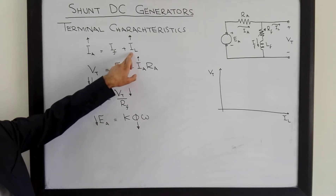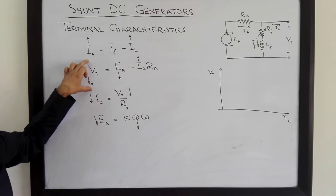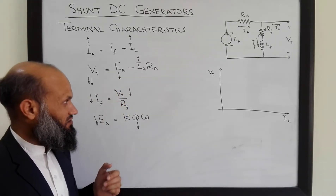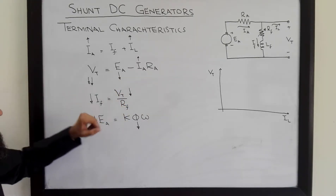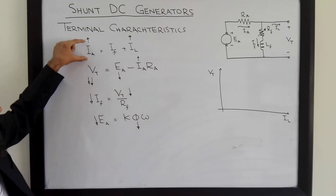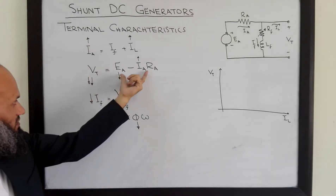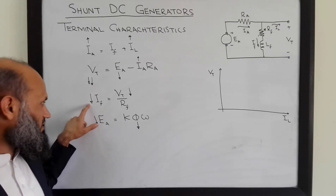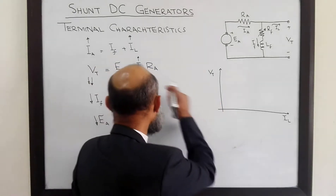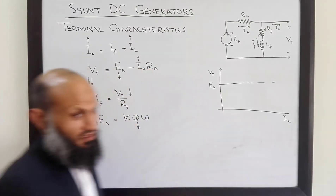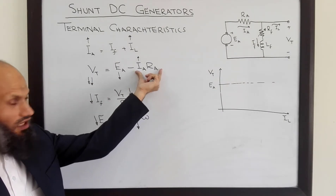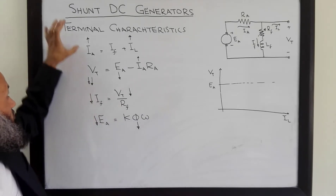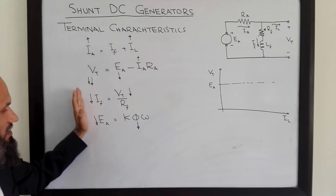Due to increase in load current, there is a decrease in terminal voltage. This decrease is more significant than in the case of separately excited DC generators. For separately excited DC generators, increase in load current caused an increase in armature current that resulted in a decrease in terminal voltage. However, the field weakening effect was not present in the case of separately excited DC generators. So, if we plot the terminal characteristics of shunt DC generators, there is the effect of Ia·Ra drop, and there is another effect called the field weakening effect. In shunt DC generators, there are these two effects: the Ia·Ra drop and field weakening effect.